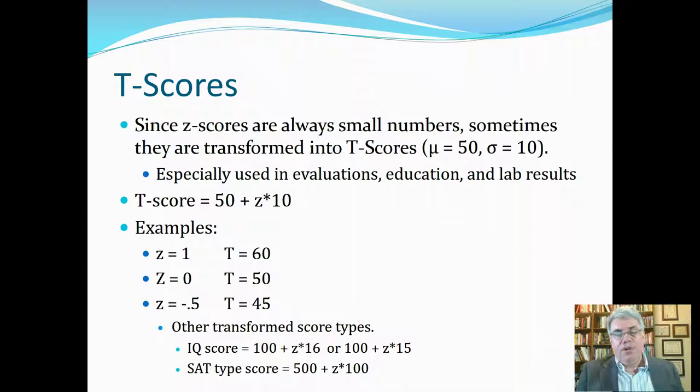Likewise, 40 would be one standard deviation below the mean, not very good, and 30 would be a disaster, that would be two standard deviations below the mean. So the formula that we can use for T-scores is the T-score equals 50 plus 10 times the Z-score. So for example, for a Z-score of 1, that would be 50 plus 1 times 10, that would give us a T of 60.